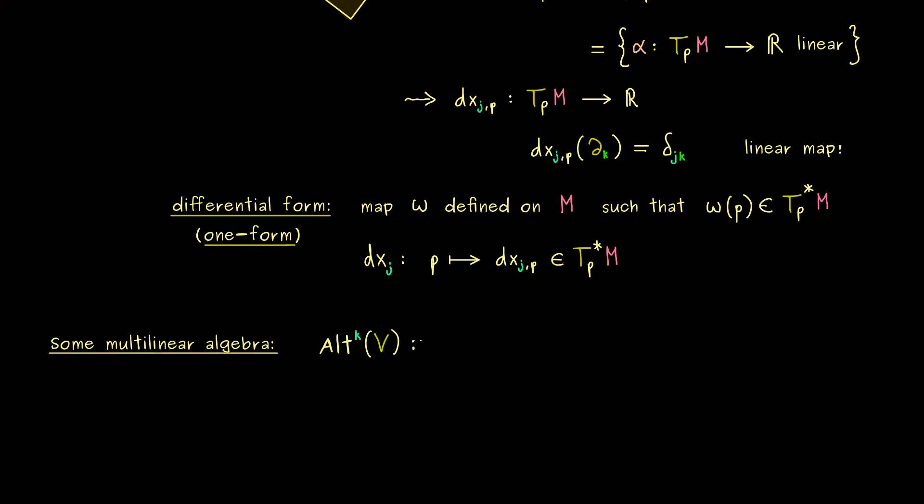And now, in order to define so called two forms or generally speaking k forms, we need to do some multilinear algebra. Simply because we want to extend this output from linear maps to so called multilinear maps. However, we can already look at a special subset and we call this Alt^k. And this one we define for every vector space V. So what is the definition of this set here? It's a set of maps and we call them alpha again.